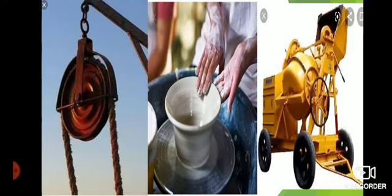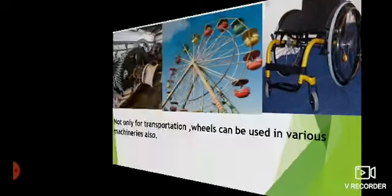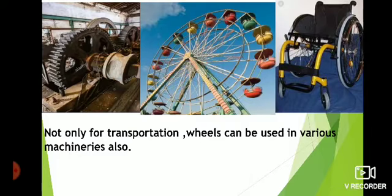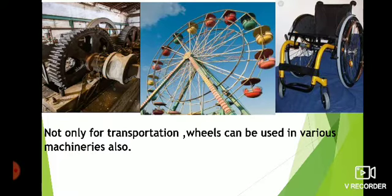Ceramic or clay pots that we use at our homes — and the third picture is a concrete mixer, you might have seen. In all these things wheels are used for other purposes. Also, the first picture here is a wheel in a factory. The second picture is a giant wheel — nowadays we are not able to go out for a picnic but we are all really interested in this. The third picture is a wheelchair. So from this we can understand that wheels are not only used in vehicles; they are used in various machineries also.